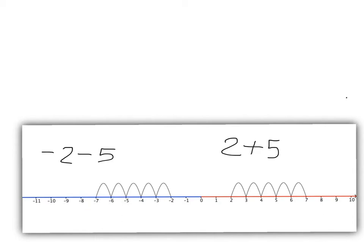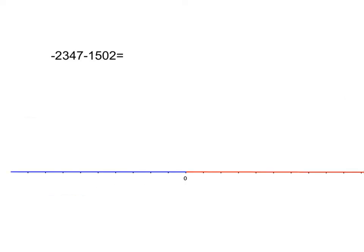So we can use the idea of how adding works on the positive side to do anything where we're starting negative and we get more negative. So now if I'm faced with something like negative 2,347 minus 1,502, I can use my knowledge of positive numbers to help me get this quickly. I know that if I take 2,347 and I add on 1,502 I'm going to end up with 3,849.